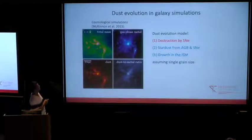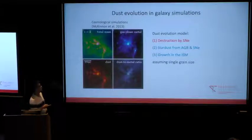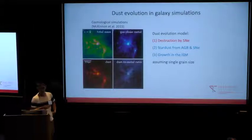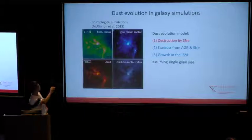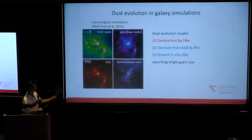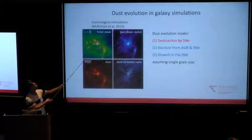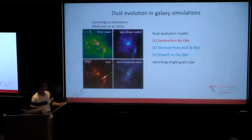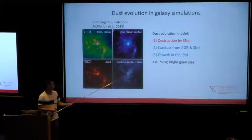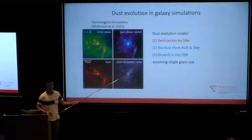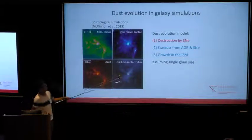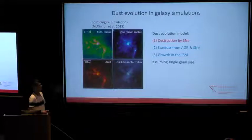Recently, there have been efforts to really follow how dust evolves and forms in galaxy simulations. Here's an example from cosmological simulations showing the total mass in the upper panel and the dust surface density in the lower panel. You can see they trace the total mass, but if you look at the dust-to-metal ratio, you immediately realize it is not really a constant — which is what people have assumed in simulations for decades.